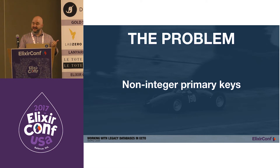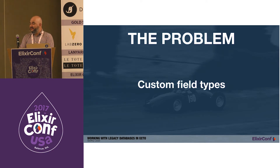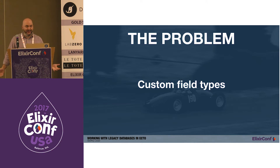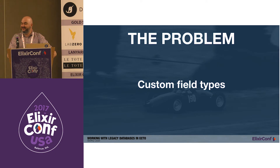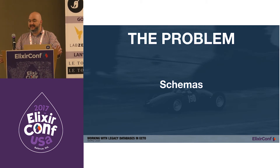Another issue is non-integer primary keys. Some databases use something else like a UUID — a universal identifier — which is a string that's the primary identifier for a row. Another issue is custom field types that Ecto doesn't know how to deal with — we'll go over a quick implementation of how to handle those. And finally, some schemas. This is an area I haven't personally dealt with, but I'll describe how to utilize schemas in databases.